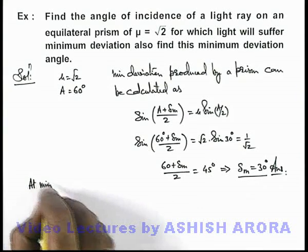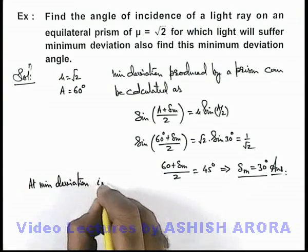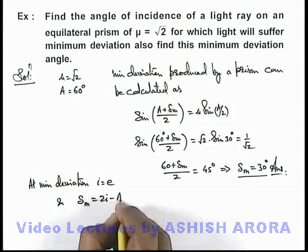At minimum deviation, the value of i is equal to e and the value of delta m we can write as 2i minus A. This implies the value of incidence angle corresponding to minimum deviation we can write as delta m plus A by 2.